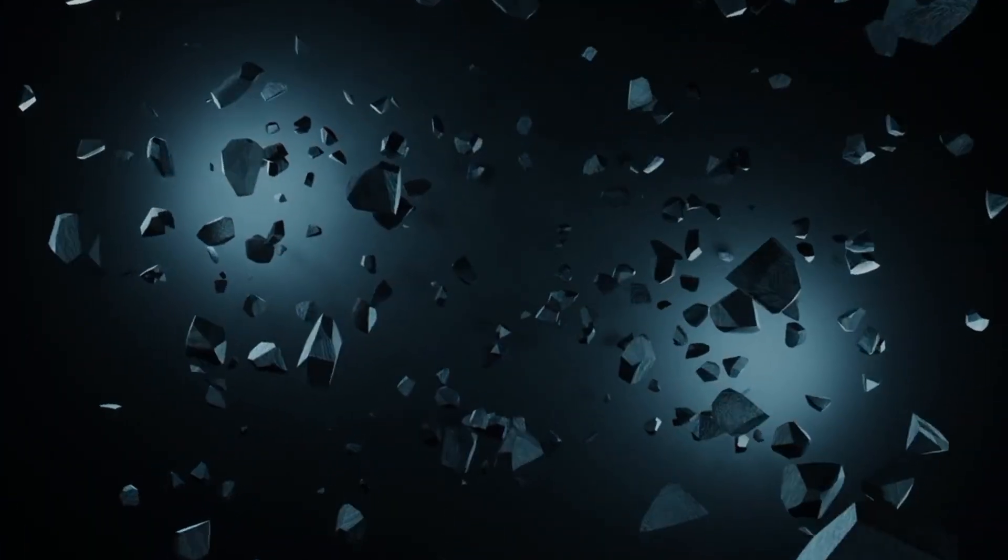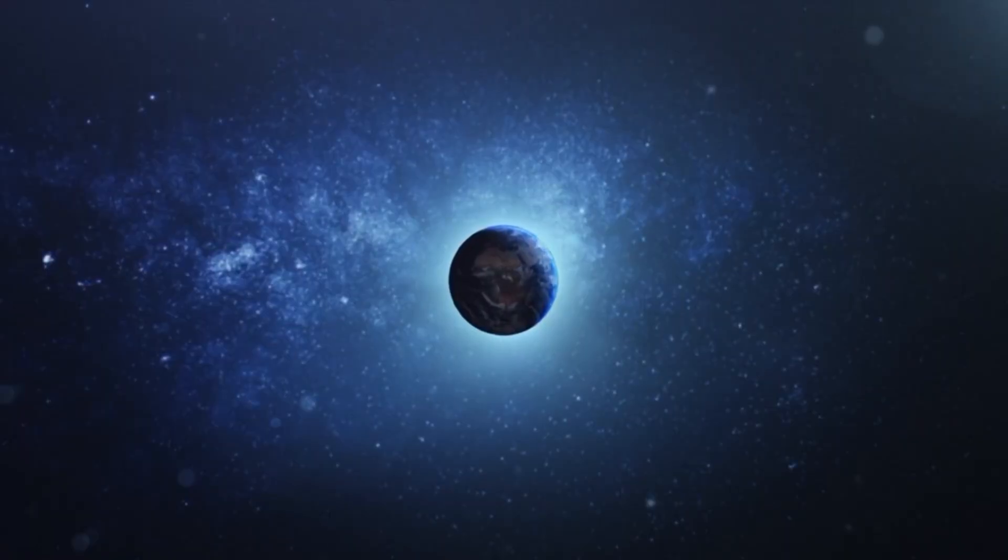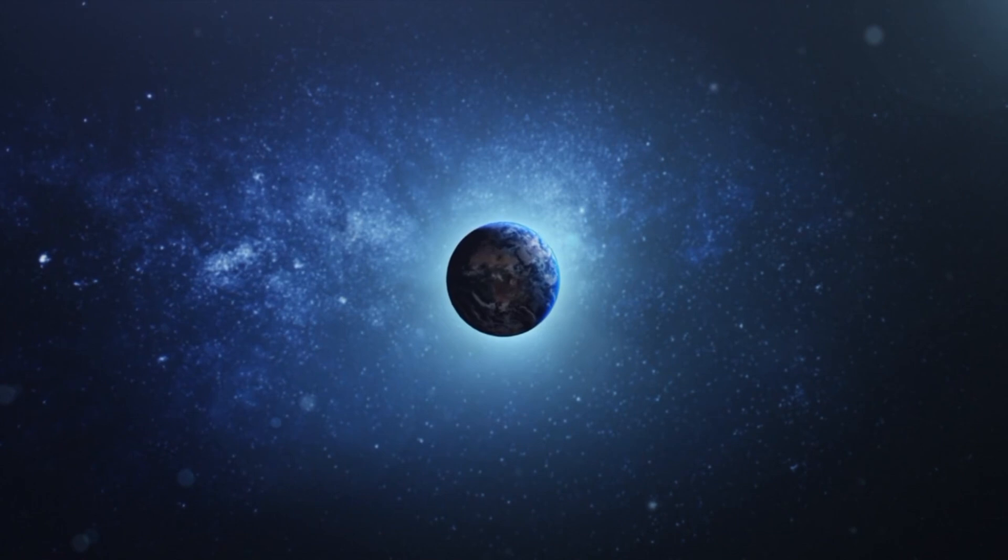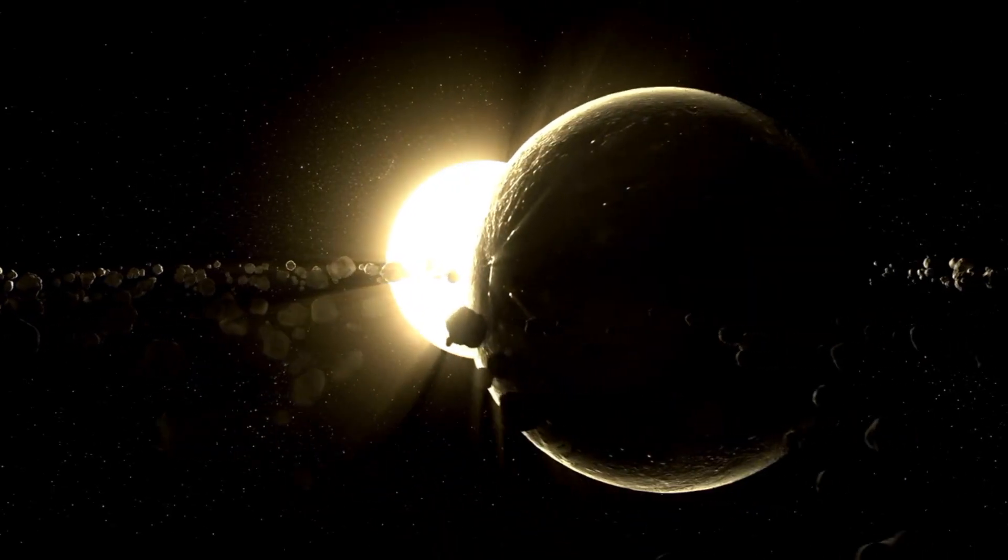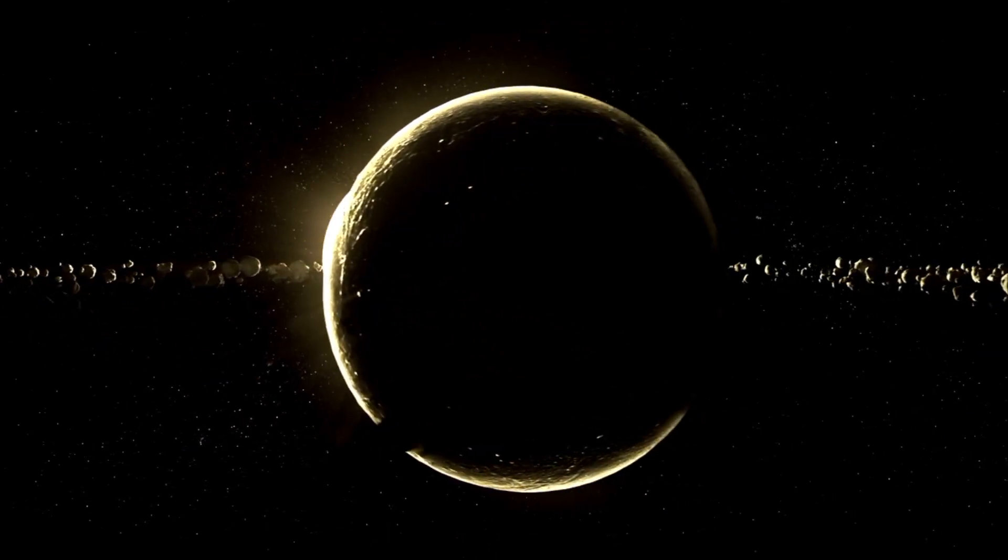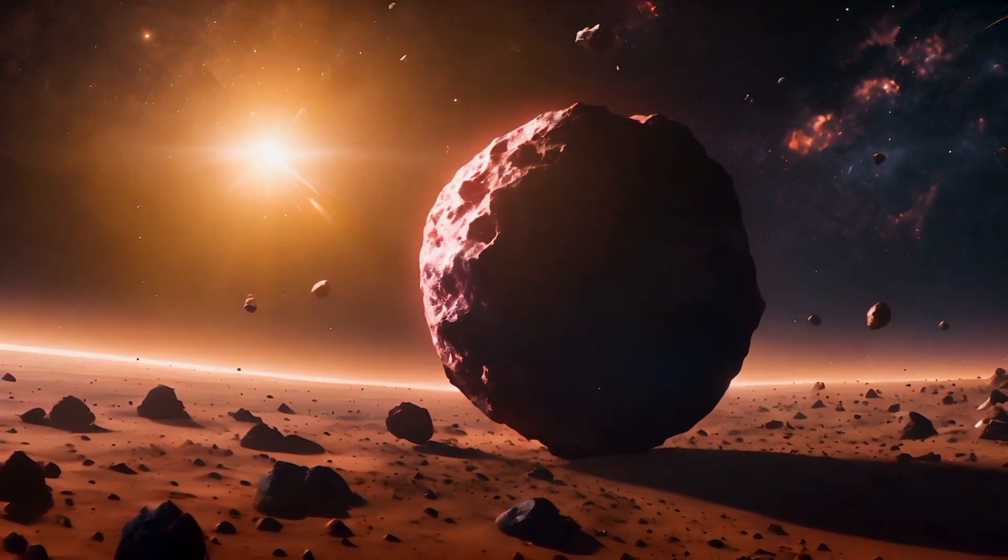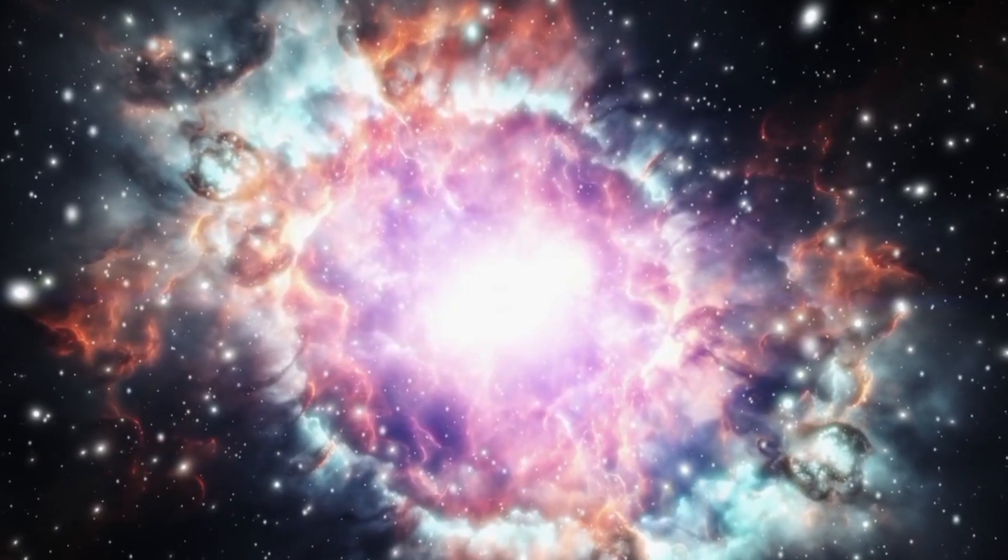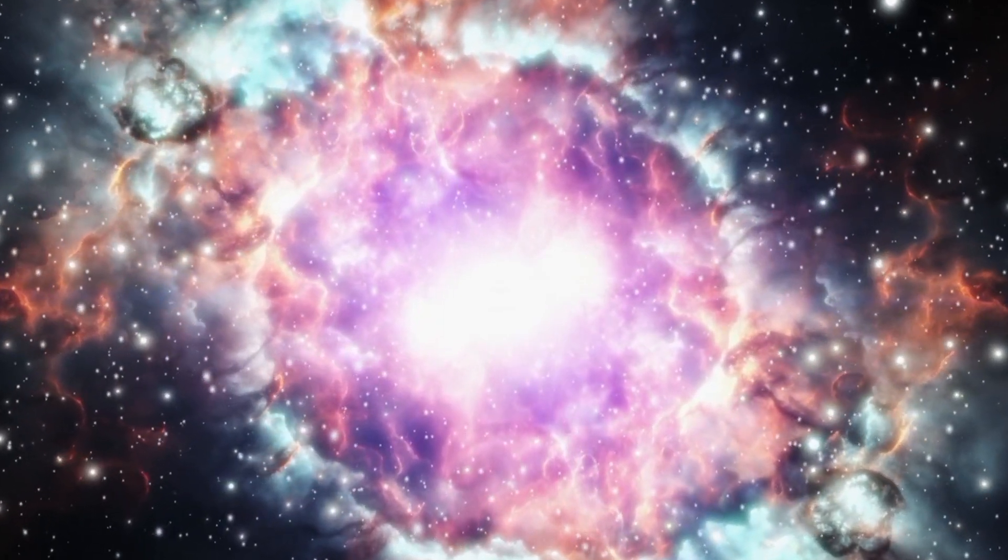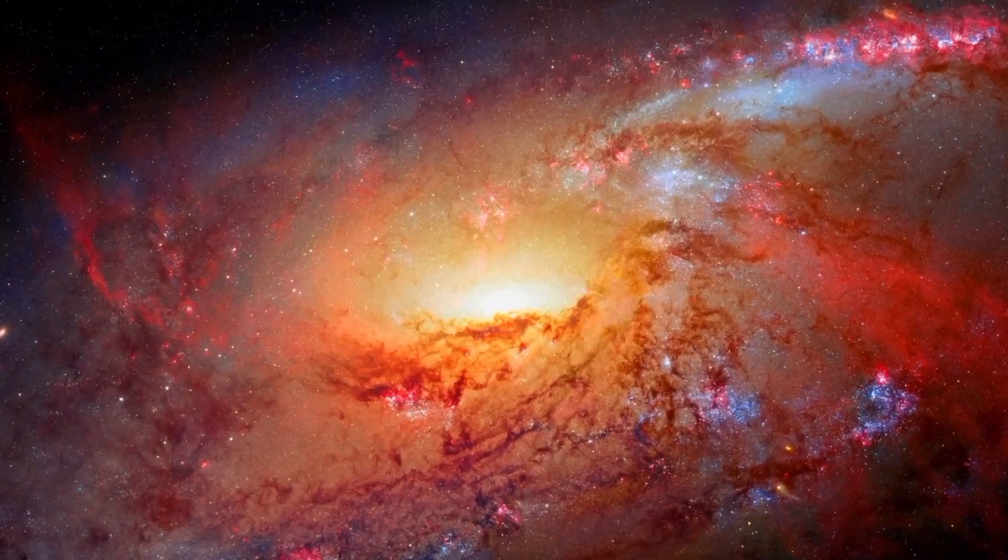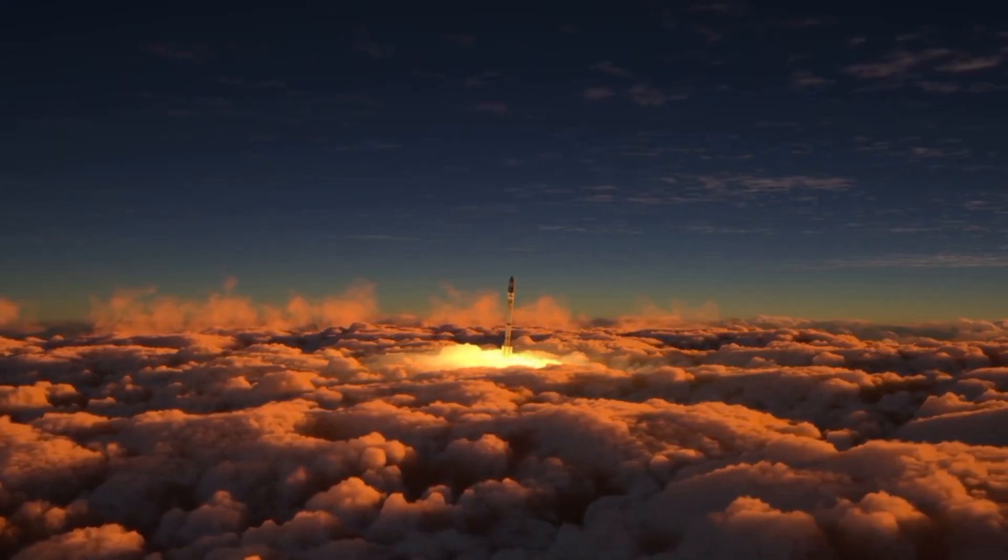Pluto's journey around the Sun is unlike any other planet in our solar system. It takes a remarkable 248 years to complete a single orbit, meaning that since its discovery in 1930, it hasn't even completed one full revolution yet. The intrigue doesn't stop there. Pluto's path is marked by its highly elliptical shape, deviating significantly from the nearly circular orbits of the major planets. What makes Pluto's orbit even more unusual is its inclination, measured at 17 degrees to the ecliptic plane.